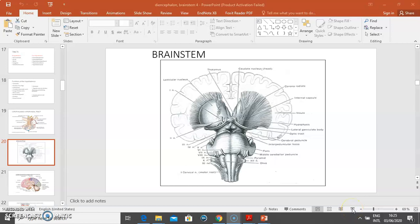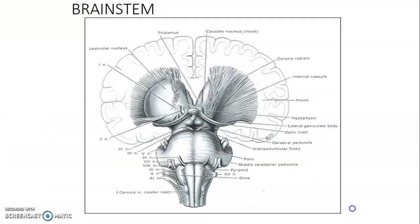Hello, we continue with our series. My name is Dr. Ominde. I'm going to discuss the brainstem. The brainstem is composed of three parts: the midbrain, pons, and medulla oblongata. That picture depicts the parts — that's the midbrain, that's the pons, and that's the medulla oblongata.